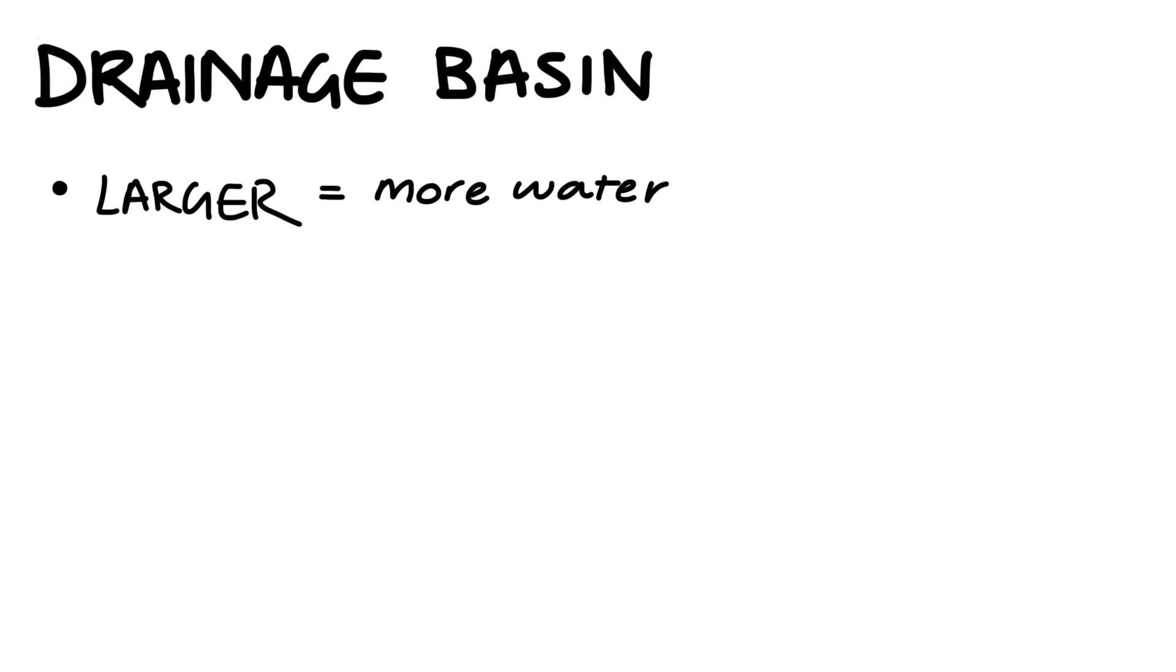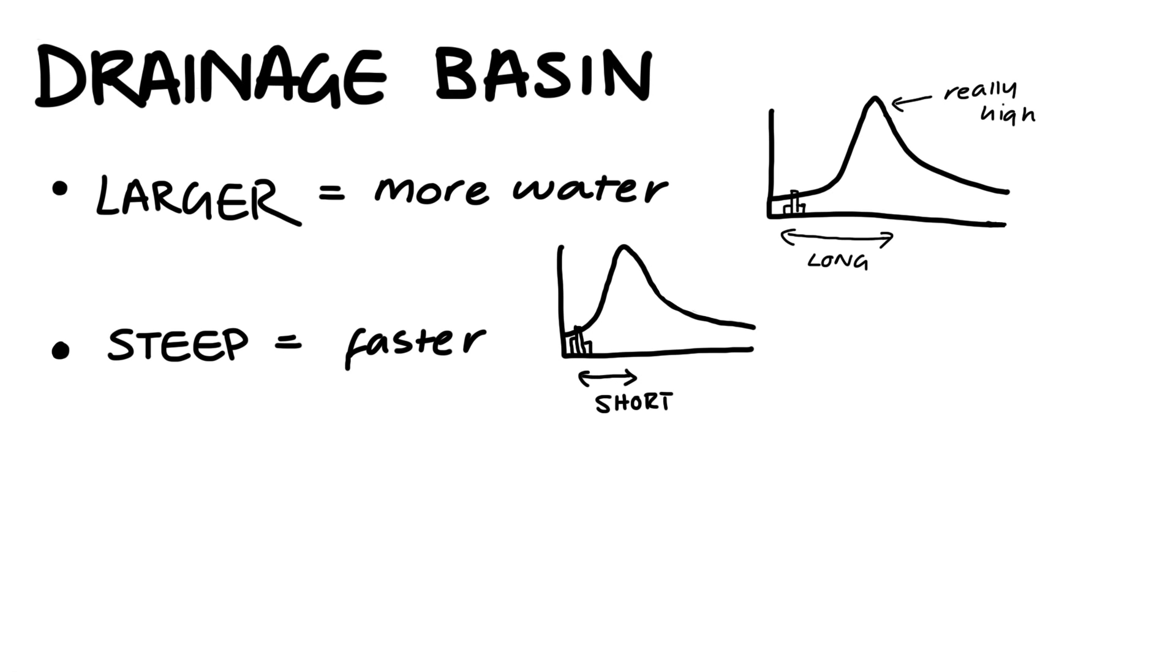A larger drainage basin can catch more precipitation, causing a higher peak discharge. The water has a larger distance to travel however, and so it will have a longer lag time than a smaller basin. Steep sided drainage basins though, will have a shorter lag time due to the quicker flowing water.